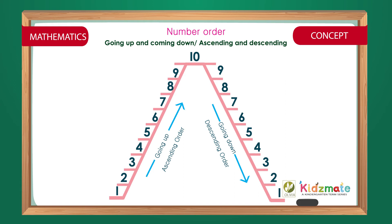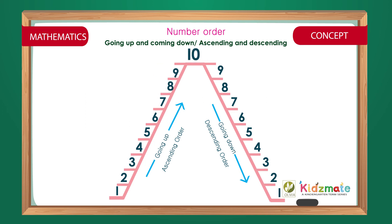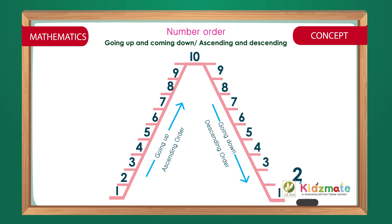Going up: ascending order. Going down: descending order. Number order going up and coming down, or ascending and descending. 1 2 3 4 5 6 7 8 9 10 9 8 7 6 5 4 3 2 1. Going up: ascending order. Going down: descending order.